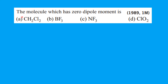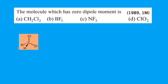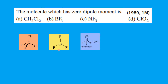The molecule which has zero dipole moment — the options are dichloromethane, boron trifluoride, hydrogen trifluoride, and ClO₂. See this structure now. Dichloromethane is a tetrahedral structure. Boron trifluoride is trigonal planar. This is a pyramidal structure and the last one is bent shape.